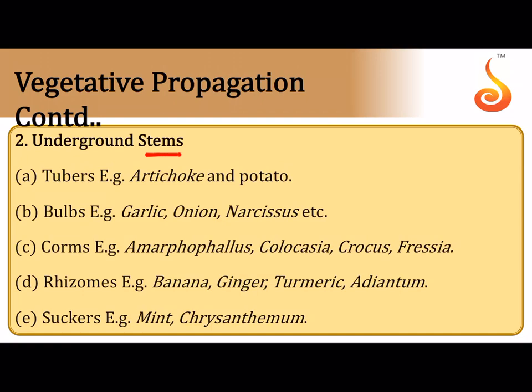Underground stems include tubers meant for storage, as in artichoke and potato. Bulbs are specialized highly condensed stems seen in garlic, onion, and narcissus. Corms are underground stems which develop at the base of the main axis, bearing nodes separated by internodes with scaly leaves, and sometimes adventitious roots and buds, as in zaminkand — that is amorphophallus collocasia.